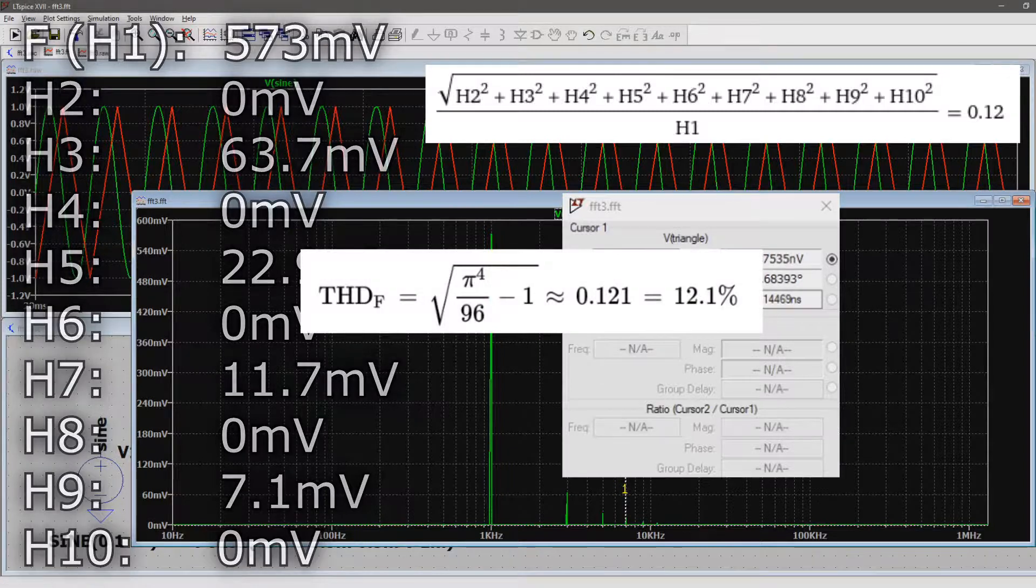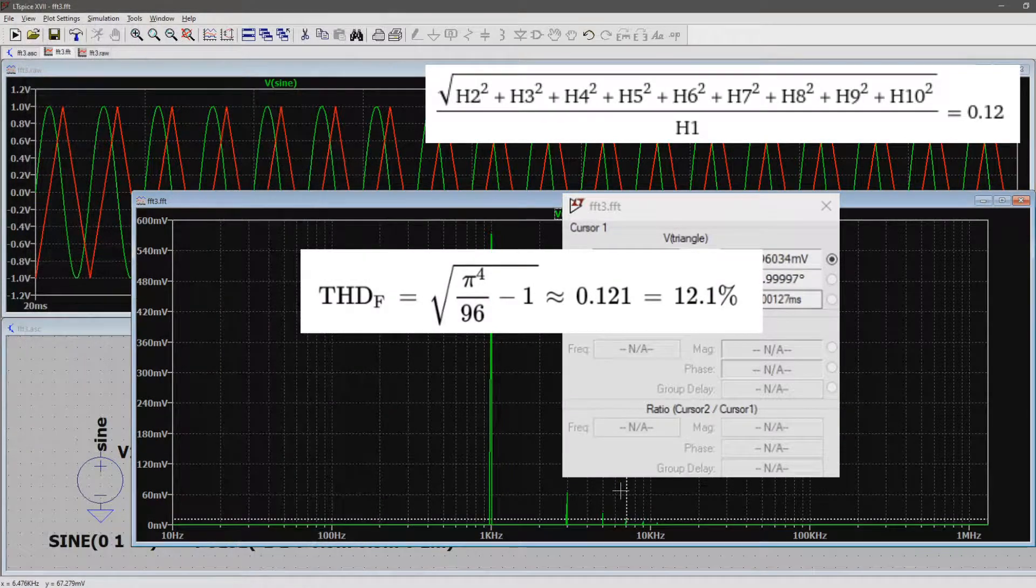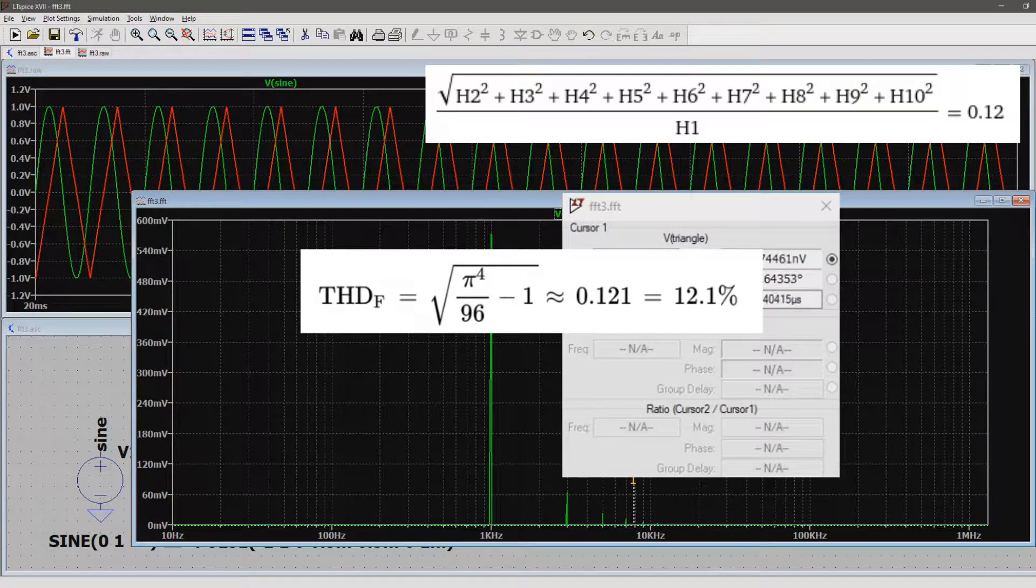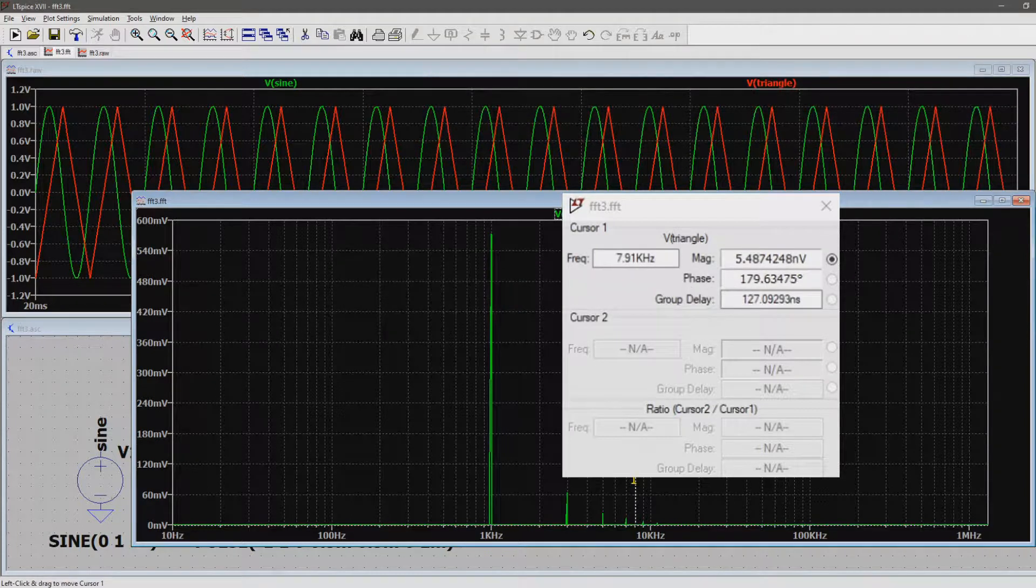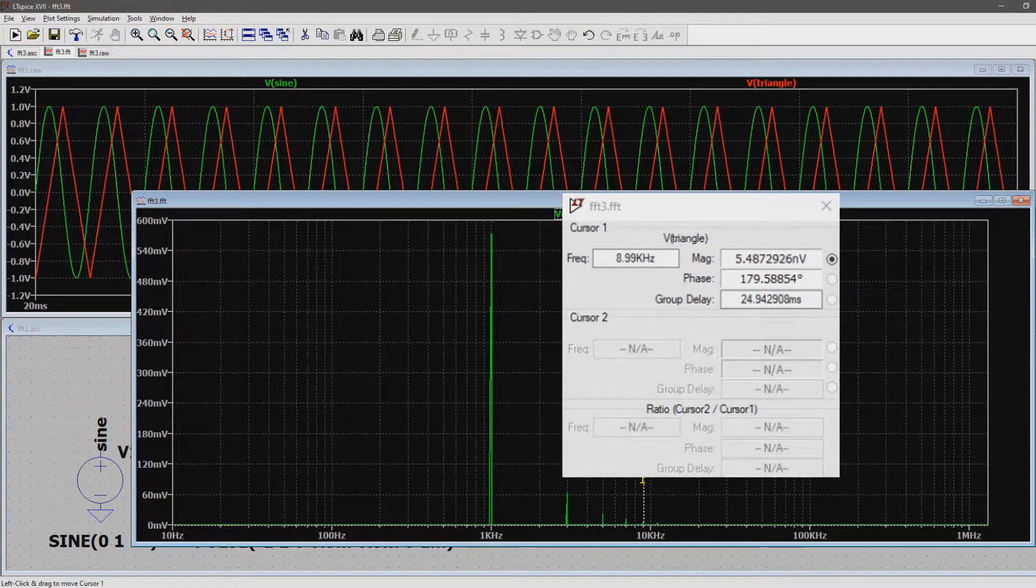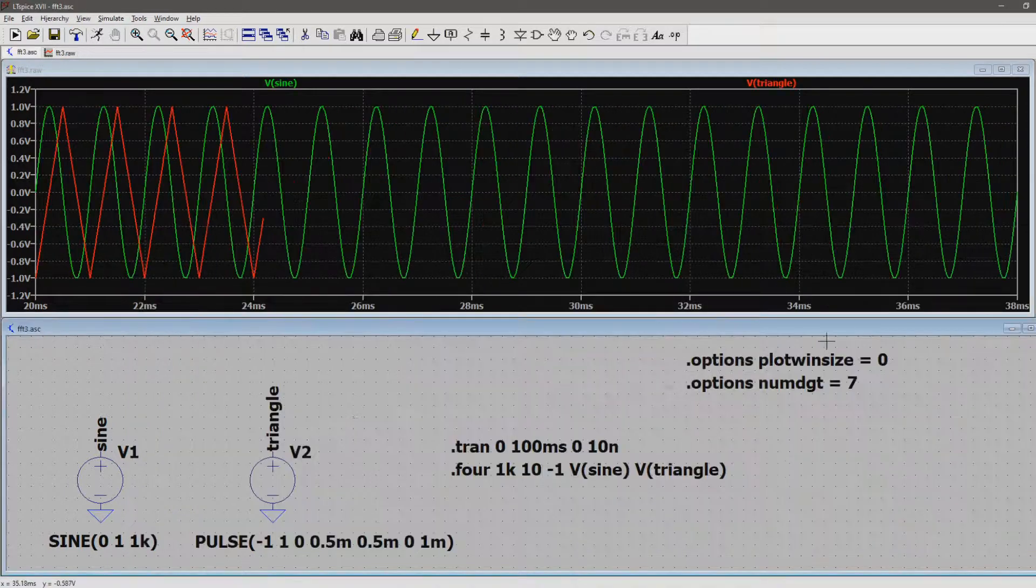Now we solve the formula and we end up with a total harmonic distortion of about 12%. This is great news because the THD of a triangle is defined as being 12.1%. Now writing down all these values and then doing the calculations can take a lot of time. Luckily LTSpice can do all of this for us. We just need the Fourier spice directive.